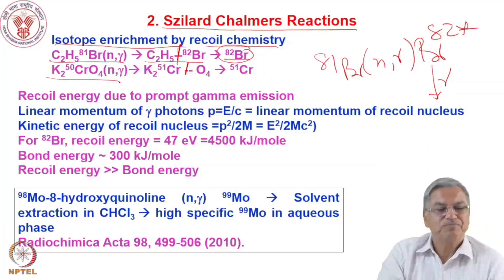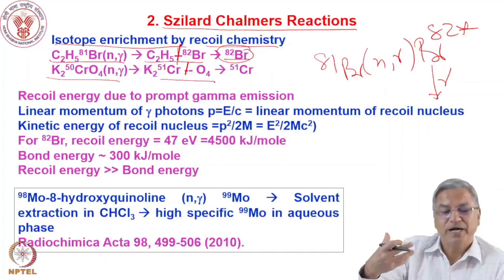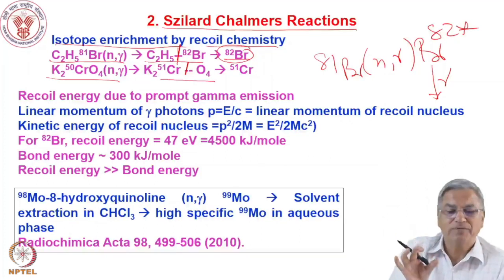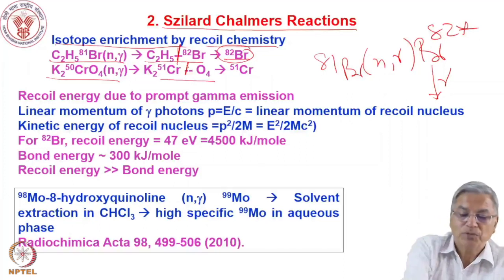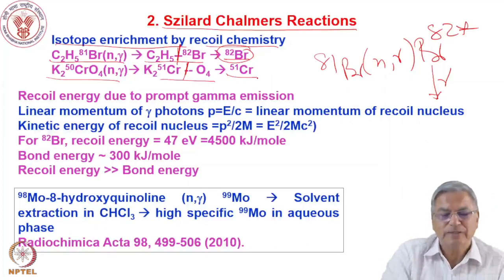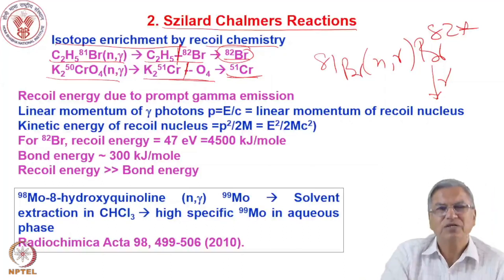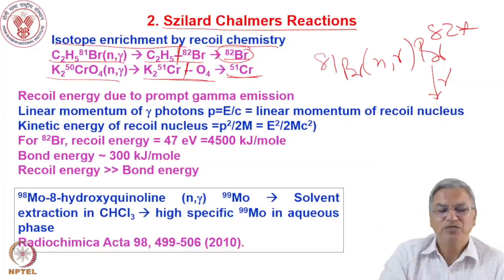Similarly, irradiating potassium chromate (K₂CrO₄) with neutrons produces Cr-51 chromate. The N-gamma recoil can break the Cr-O bonds, and the free chromium may stabilize as Cr³⁺, which has different chemistry than the chromate ion (Cr⁶⁺). Since the target and radioisotope have different chemistry, you can do separation and get carrier-free radioisotope. A practical example is irradiating molybdenum-8-hydroxyquinoline complex, where the recoil detaches Mo-99, which can then be concentrated in the aqueous phase while bulk Mo-98 hydroxyquinoline remains in the organic phase.